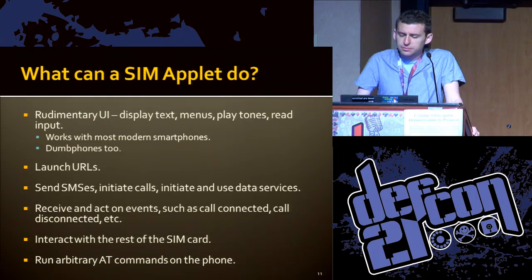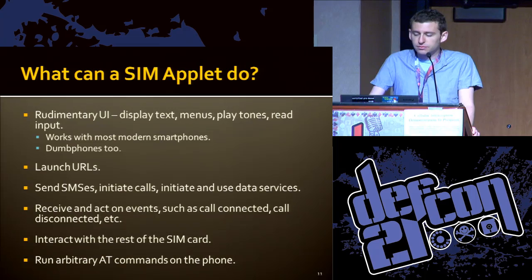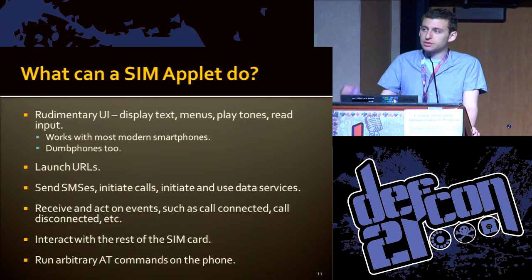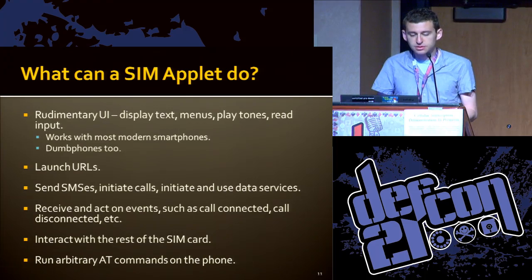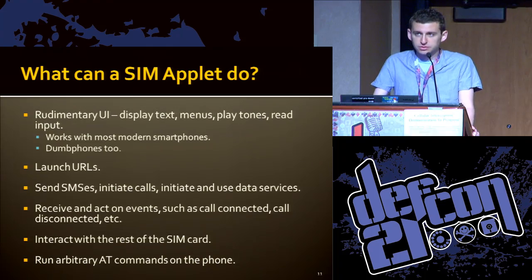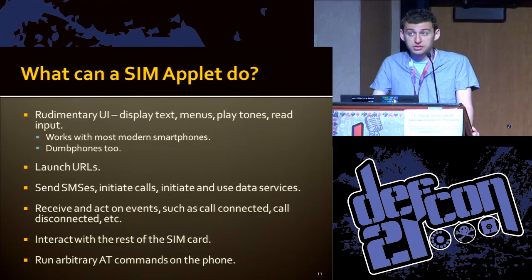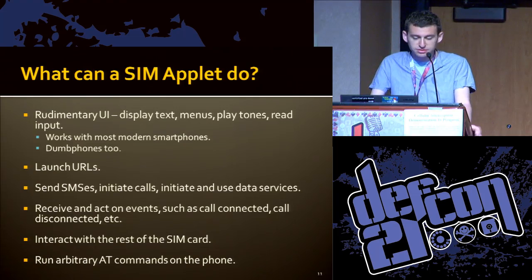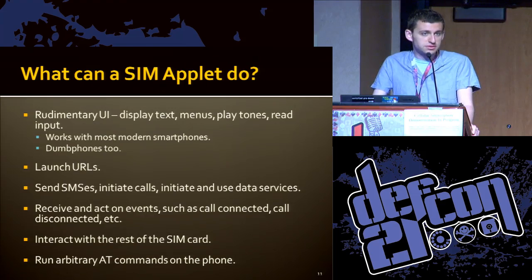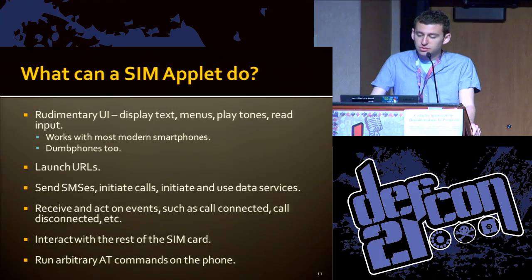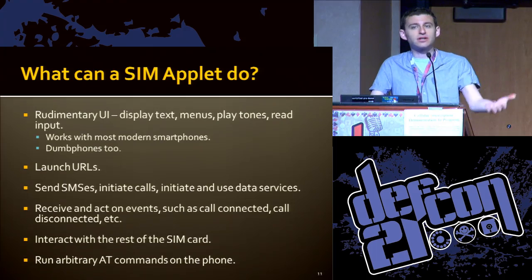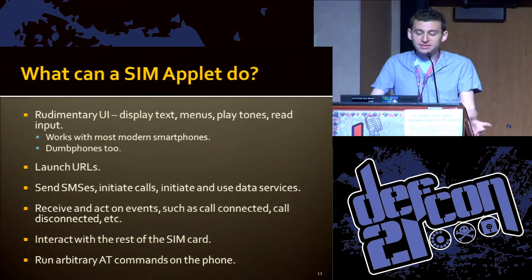So what can one of these applets do? Most phones, including modern smartphones like Android and iPhone, will support basic user interface: displaying menus, text, user input, and sometimes playing sounds. This also works on a lot of dumb phones, which is interesting for the developing world. Some phones will let the SIM launch URLs, send SMSs, initiate calls, or use data services. You can receive events — in some cases detect when the user is dialing and maybe even rewrite that number. There are over 200 unique features that a handset can declare to the SIM card, and in some cases you can even run arbitrary AT commands sent directly to the GSM modem.